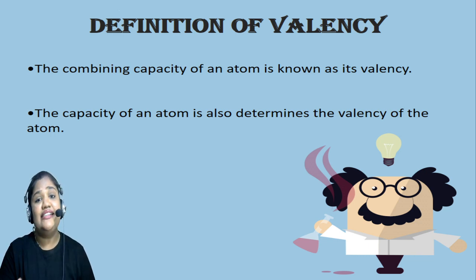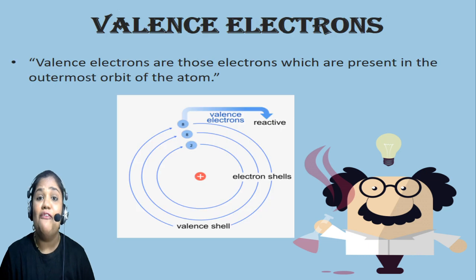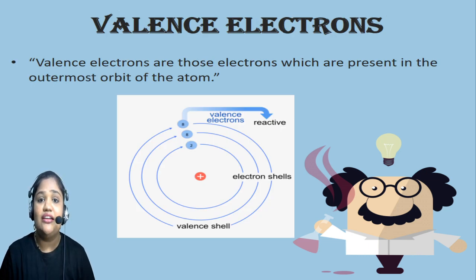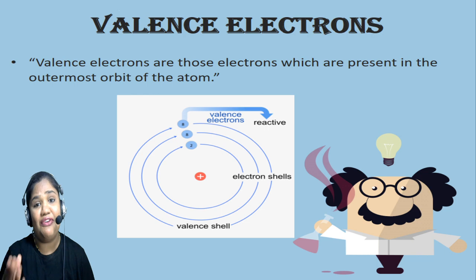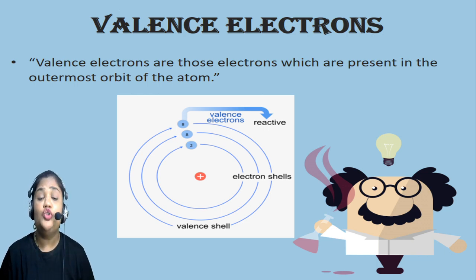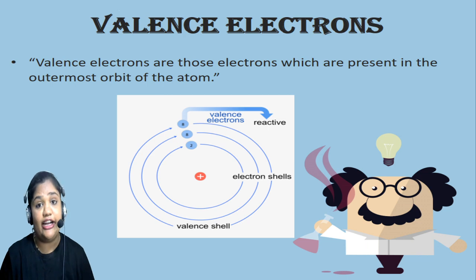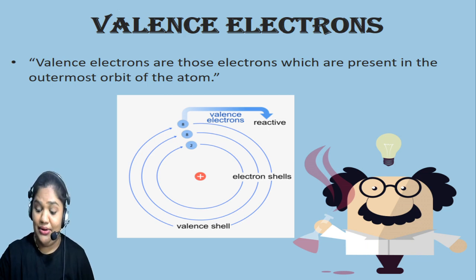Now let's discuss about what are valence electrons. Electrons which are present in the outermost shell of an atom are known as valence electrons. Do you know about the different shells and their electron capacity? Let's discuss.